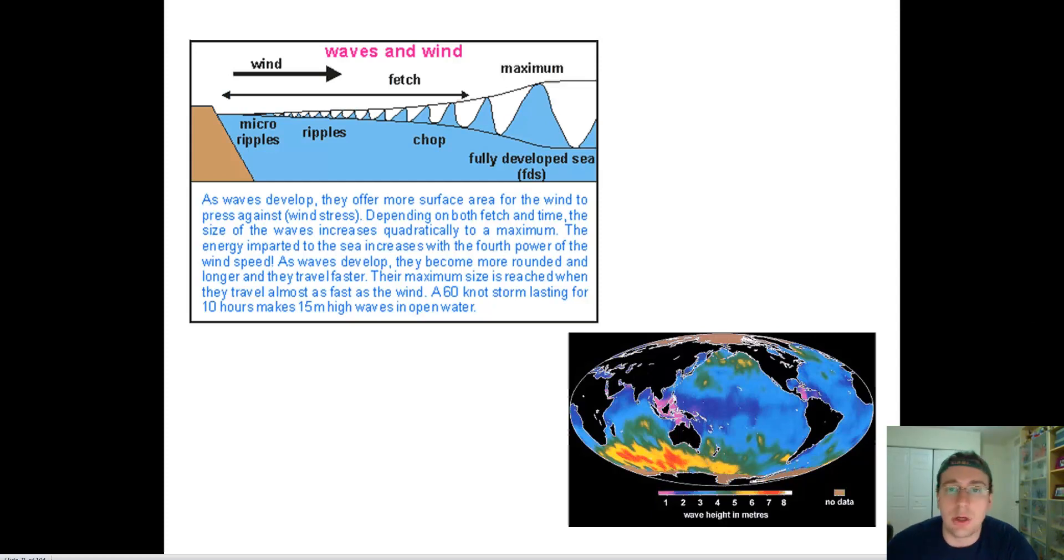as we're going to talk about when we do another video called Types of Waves, there are other things that also create waves other than winds, such as large disturbances on the surface of the ocean, such as the things that cause tsunamis, like a meteor impact, or a large landslide, or an earthquake. There's also tidal waves, waves that are associated with actual motion of tides,